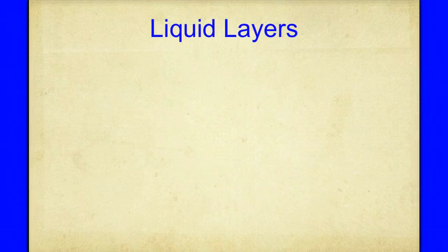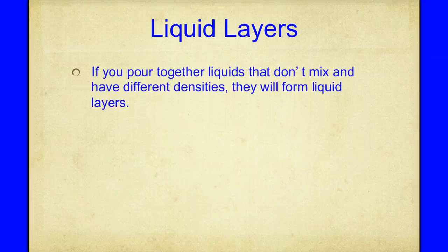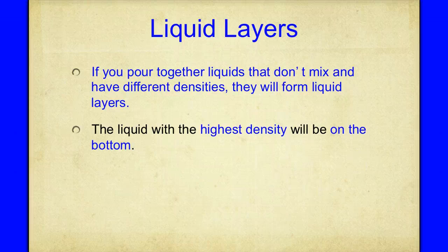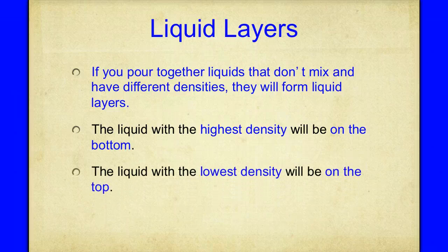We just talked about density as it relates to solids. Density also relates to liquids — liquids have volume and mass too. This leads to what we call liquid layers: when you mix or pour liquids together that don't mix or have different densities, they will form layers. Liquids with higher densities sink to the bottom, and liquids with lower density float to the top.